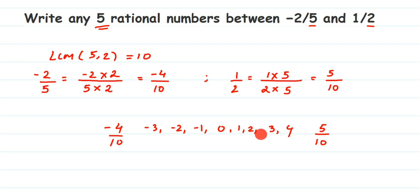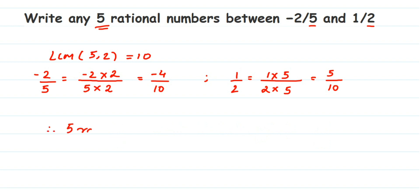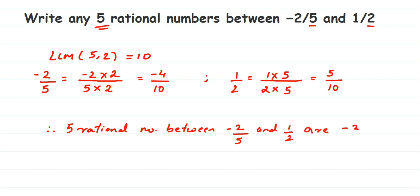So therefore, five rational numbers between minus two by five and one by two are: minus three by ten, minus two by ten, minus one by ten, zero, and one by ten. You can also take two by ten or three by ten — it's completely up to you.